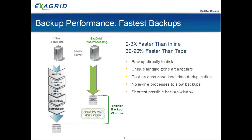Where is ExaGrid different from Data Domain, Quantum, and other solutions? We are post-process, whereas competitors use an inline solution. With inline, as backups come in, data is split into 8K blocks, a hash code is assigned to each block, those hashes are compared against a hash table to find what's unique versus duplicate — a very CPU-intensive process that gets longer as your data grows. The backup isn't finished until that data lands on disk after deduplication. If you're trying to keep your backup window shorter, inline is not the solution.